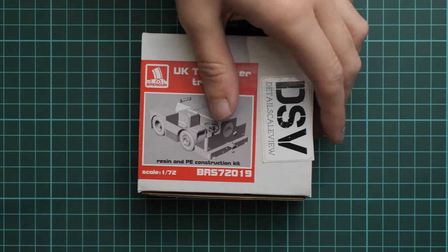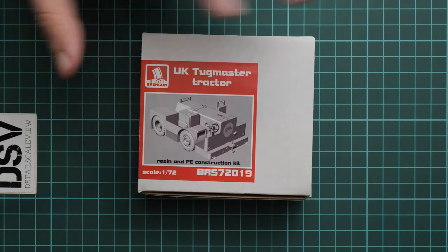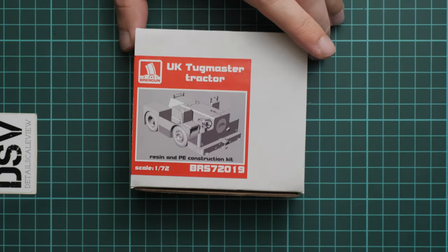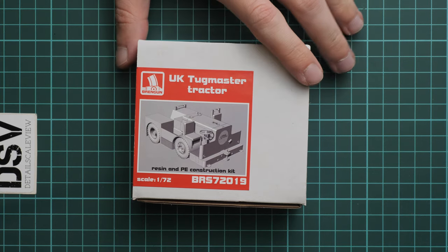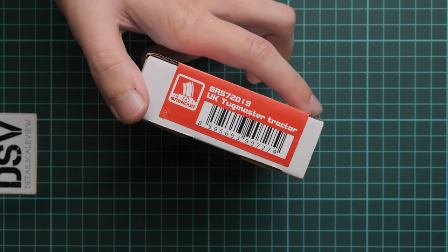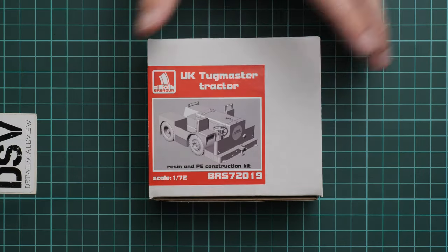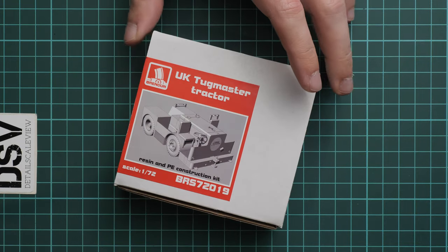So we have a commercial sample here and it means you will get exactly the same stuff as you will see in this video review. And this package is pretty much standard for BrenGun, you can notice here this 3D image and we also have kit number here. We have also barcode, but that's pretty much all about this packaging, so we are going to open it and check what is supplied here.